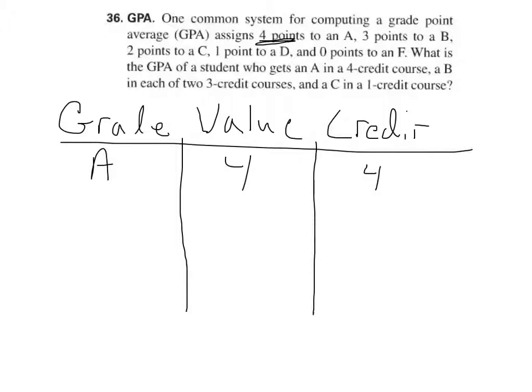Then the student got two Bs, and those are worth three points, and this is in a three-credit course each because it's two three-credit courses. Then got a C, but we're taking a fairly light load this semester, it looks like. So a C is worth two points, and this is a one-credit course.